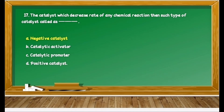Question 37 is again on classification of catalysts: The catalyst which decreases the rate of any chemical reaction — such a kind of catalyst is called as dash dash. The word 'decrease rate of chemical reaction' is very important. We know that when the rate increases, we use a positive catalyst, and if the rate is decreased, then we use a negative catalyst. Therefore, in all four options, option A, negative catalyst, is correct.